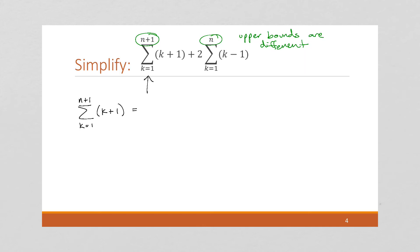So, expanding this would give us 1 plus 1 plus 2 plus 1, I'm just substituting the values in for k, plus 3 plus 1, all the way up to n plus 1 plus n plus 1 plus 1, which is our upper bound.